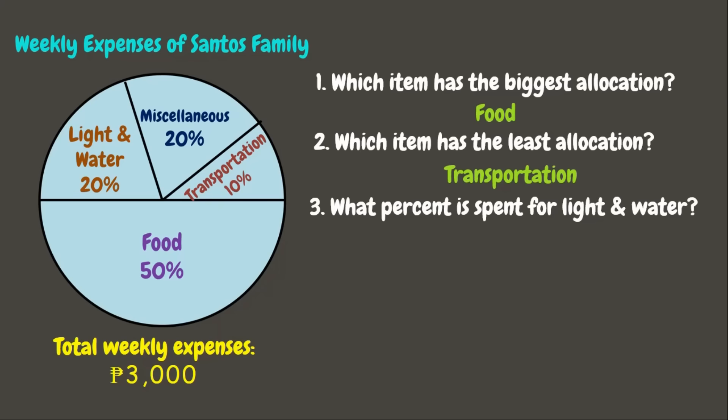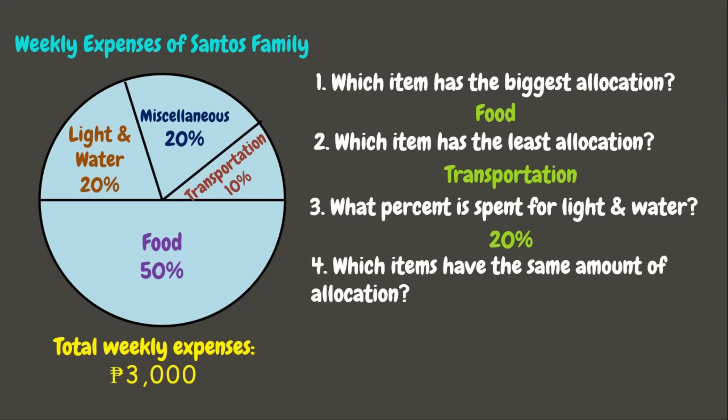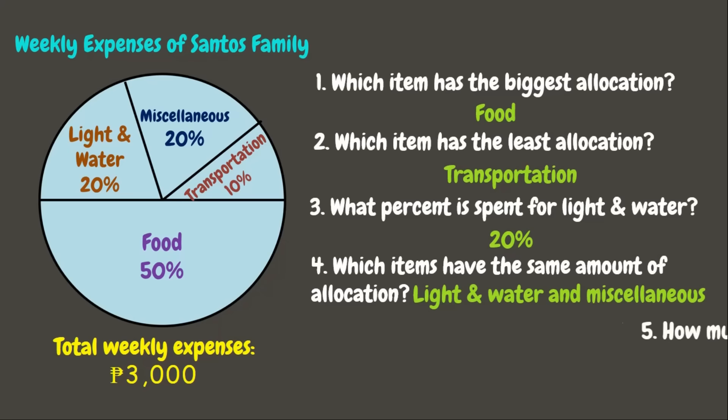Question 3: What percent is spent for light and water? The percent for light and water is 20 percent. Question 4: Which items have the same amount of allocation? We can see that light and water and miscellaneous have the same amount of allocation, which is 20 percent each.